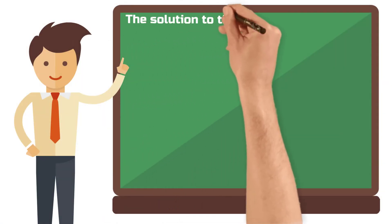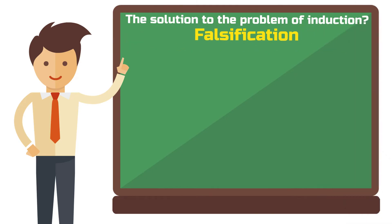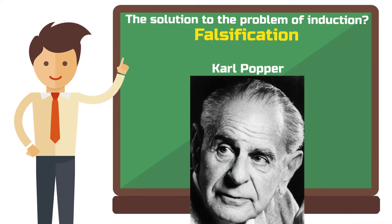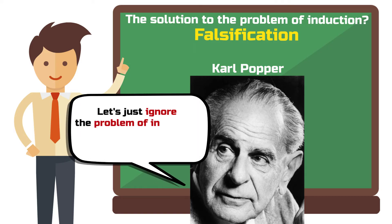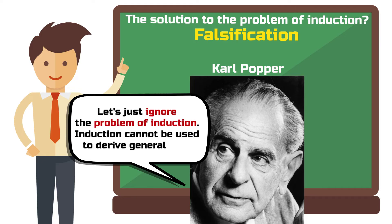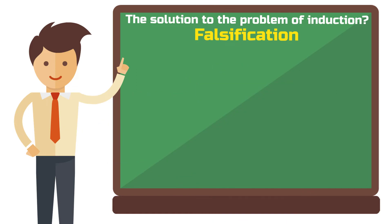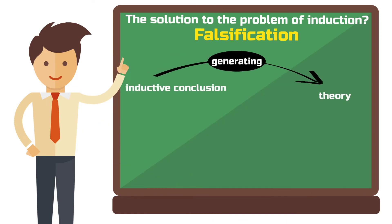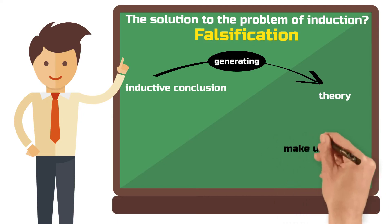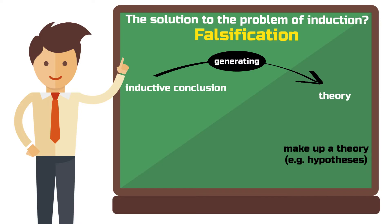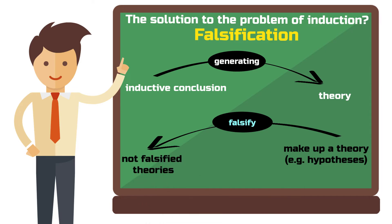200 years after Hume, another big player in epistemology enters the scene: Karl Popper. He believes he has found the solution to the problem of induction. Actually, he can't really solve it, but suggests instead to simply ignore it. He completely agreed with Hume that general laws cannot be derived through induction. What one can logically do, however, is falsify general laws. Instead of generating a theory based on an inductive conclusion, you can simply make up a theory, form certain hypotheses, and then try to falsify it. What remains are only the theories that have not been falsified yet.